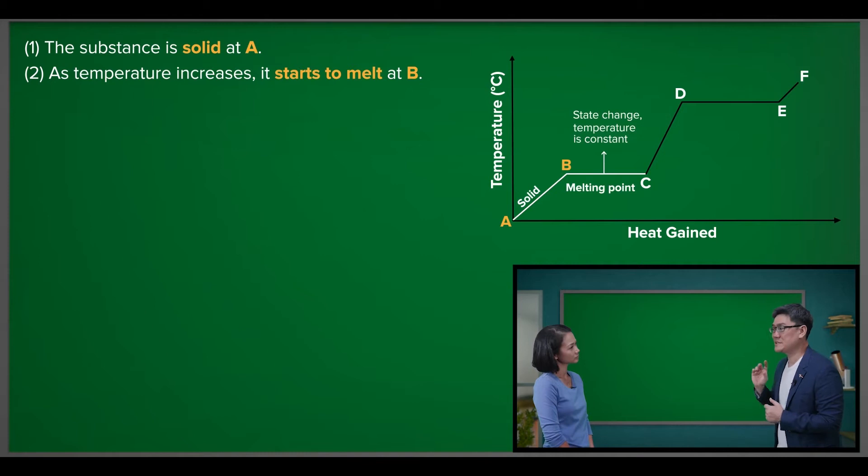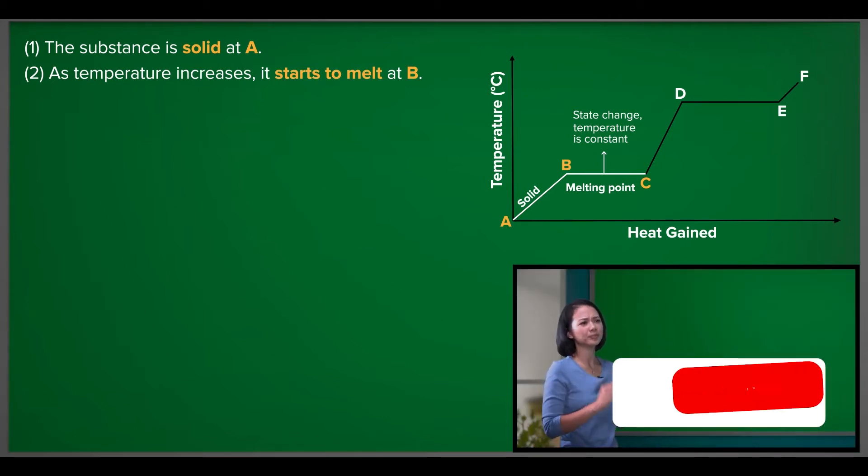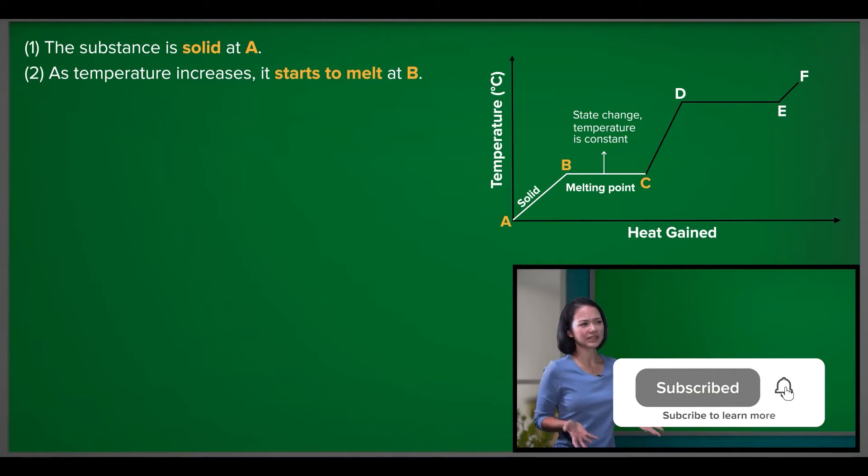From B to C, the temperature stays constant because the substance is undergoing state change. So from B to C, what is the state of the substance?